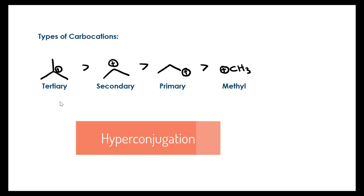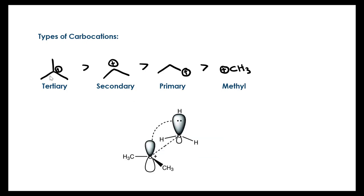This has to do with hyperconjugation. Hyperconjugation is the favorable interaction that occurs between the empty p-orbital of a carbocation carbon and the adjacent methyl groups in this case.